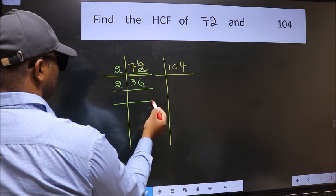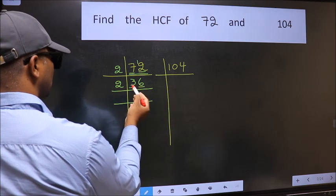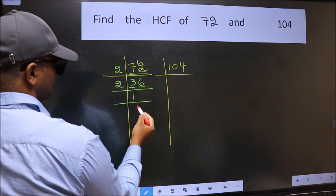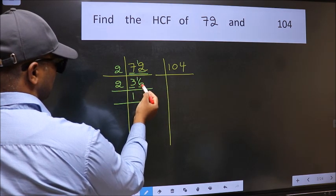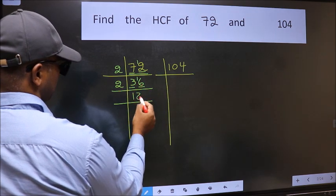Now last digit 6 even, so take 2. First number 3. A number close to 3 in 2 table is 2 times 1 equals 2. 3 minus 2 is 1, carried forward 16. When do we get 16 in 2 table? 2 times 8 equals 16.